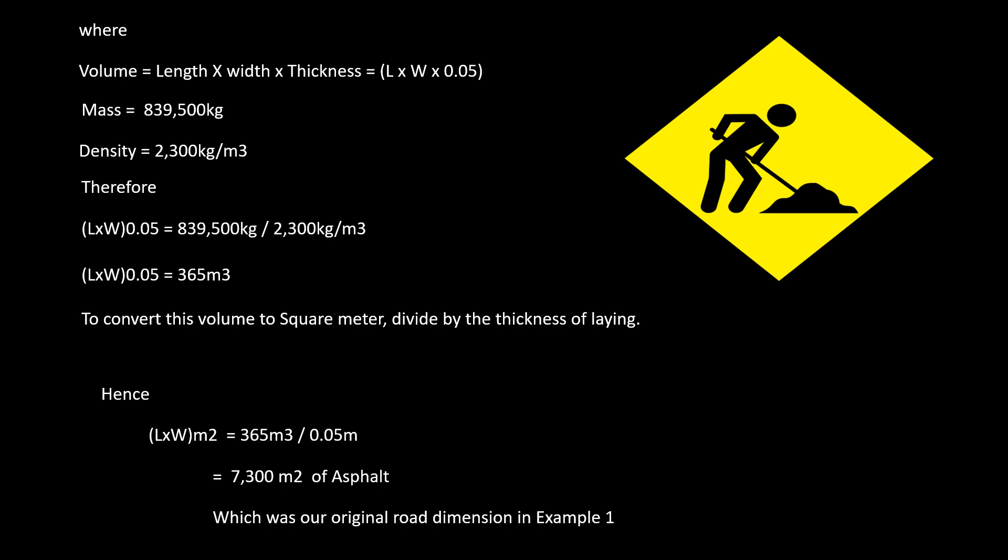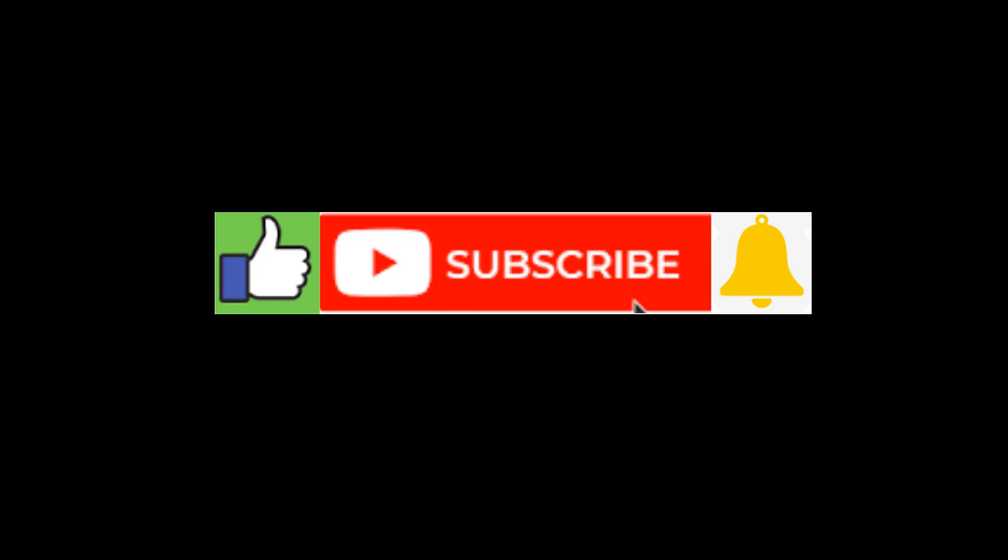To convert this volume to square meters, divide by the thickness, giving us 7300 square meters of asphalt — which was our original dimension in example one. Thank you for watching. If you like this video, hit the like button and subscribe to my channel. Turn on the bell notification icon to be notified whenever I upload another video. Bye for now and see you in the next video.